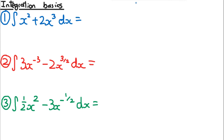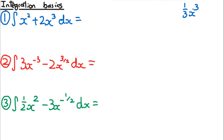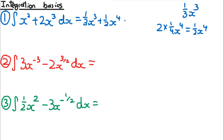If there are multiple terms, it works exactly the same way as in differentiation: we just integrate the terms individually. For example, ∫(x² + 2x³) dx: x² integrates to (1/3)x³, and 2x³ integrates to 2·(1/4)x⁴ = (1/2)x⁴. So the result is (1/3)x³ + (1/2)x⁴ + c.